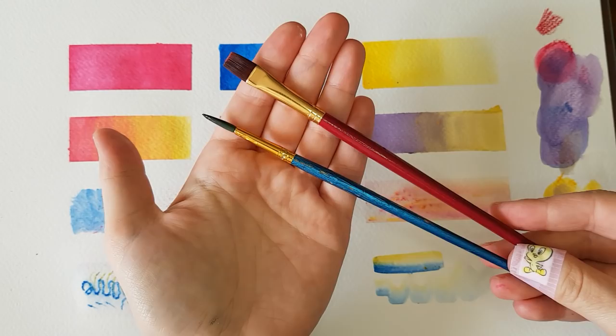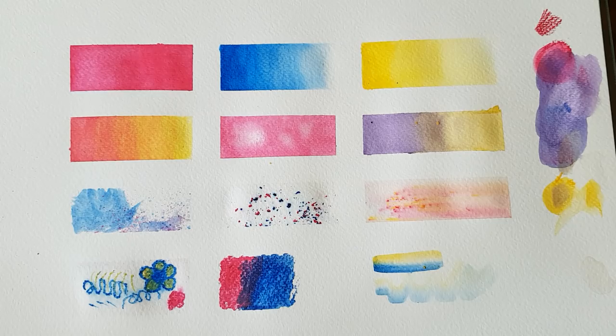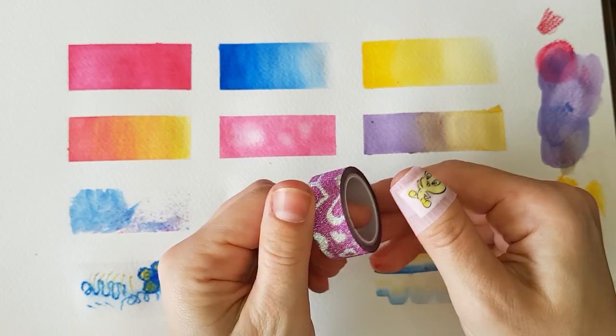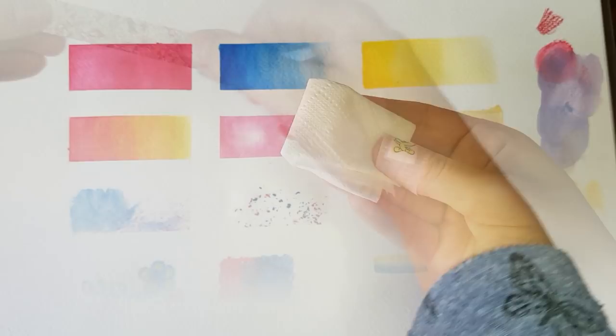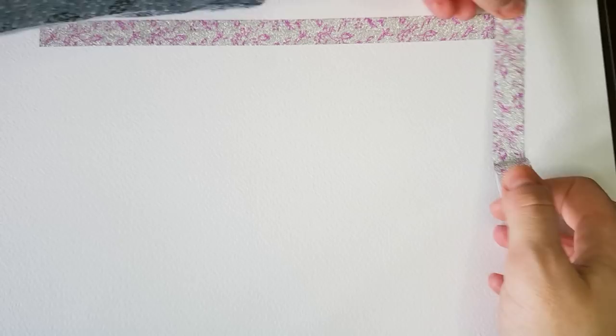Paint brushes, a round and a flat one. I use synthetic brushes, they are really good with watercolor pencils. Soft but at the same time firm enough for pushing the pigment around. Some masking tape. I love sparkly stuff so yep sparkles it is. Then we will need some soft clean tissues and of course watercolor paper.